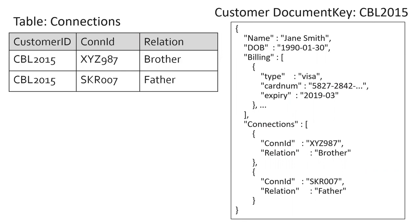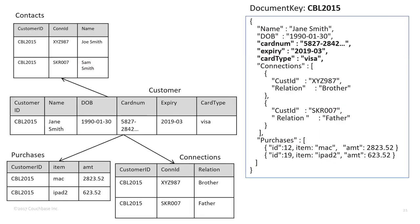Now looking at connections: we have a customer mapped to another customer, perhaps with some relationship information like brother or father. In the document database we have a connections array — and we don't need a foreign key because it's all domestic now — but this can point to a separate customer document. For instance, xyz987 points to another document for Jane Smith's brother. So that's just an array of another document key and any information about that relationship. Putting it all together: we have the customer, contacts, purchases, and connections tables — seven rows in four tables in the relational world — versus just a single document in the document world.